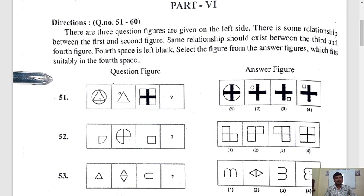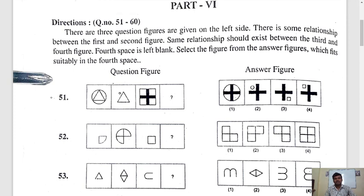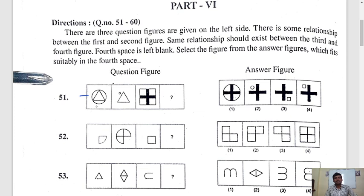First of all, we should read the instructions. What they gave? There is a similarity, a relation between first figure and second figure. See here, these two. There is a relation between these two. Then there should be a relation between these two. Circle, triangle. The triangle and circle came small.